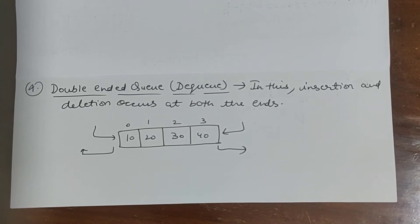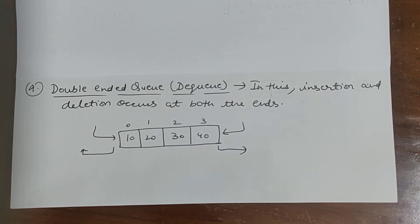Hello everyone, next topic is double ended queue. So in classical queue or you can say a simple queue, insertion takes place at one end and deletion takes place at another end. Insertion end is rear end and deletion end is front end.